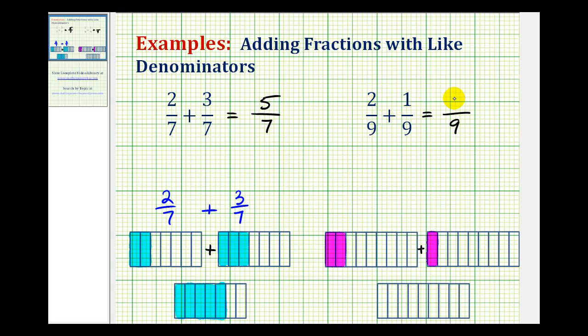Well, 2 plus 1 is equal to 3, so the sum is equal to 3/9. But 3 and 9 do share a common factor of 3.